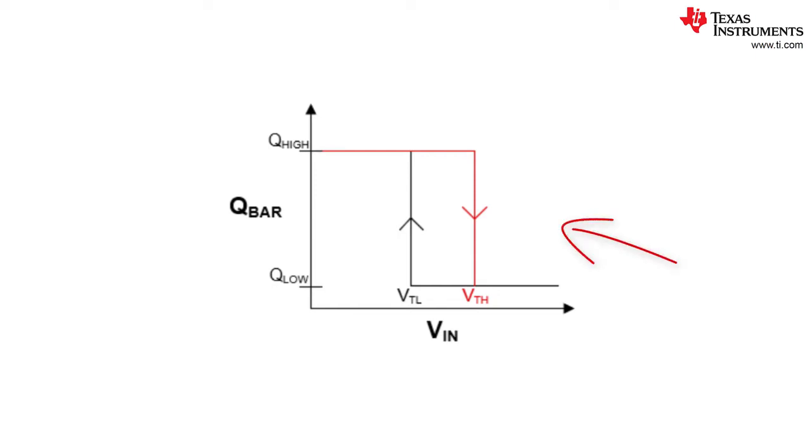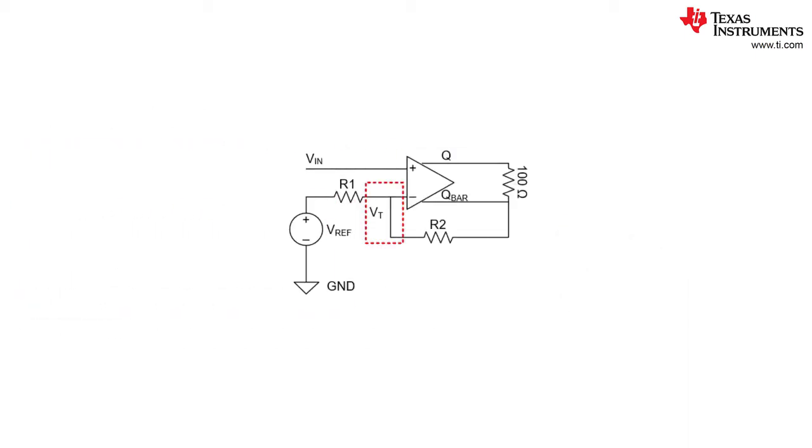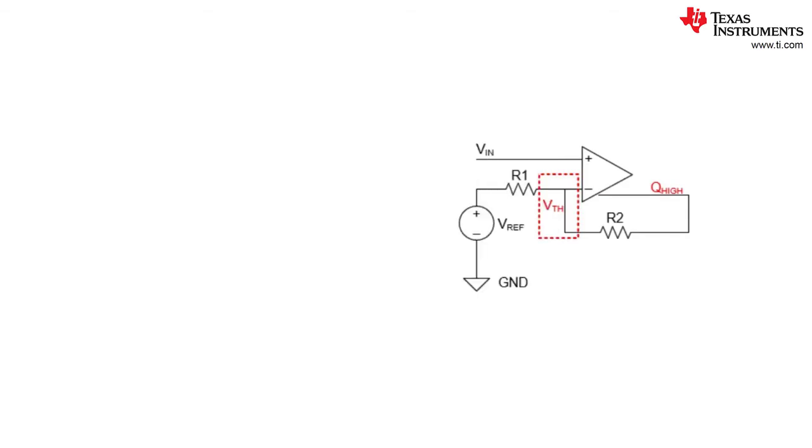Now we have to identify the threshold voltage node. After doing this we can analyze the circuit when the Q bar output is in its high LVDS state and its low LVDS state. Let us first consider when the Q bar output is in its high state and has a value of Q high.